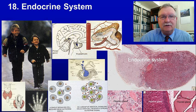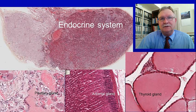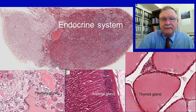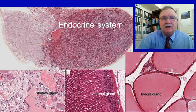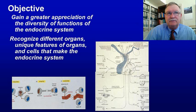Here we can see the endocrine system components. The pituitary is at the top; lower left is the pituitary, and you can see some of the cells located therein. The adrenal is in the middle, and on the far right we have the thyroid gland. So there's a diversity of different types of organs with different functions. Our goal today is to gain a greater appreciation for the diversity of functions of the endocrine system and to recognize the different organs and unique features of organs and cells that make it up.